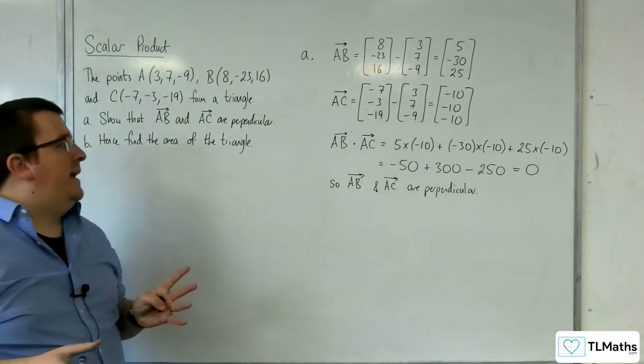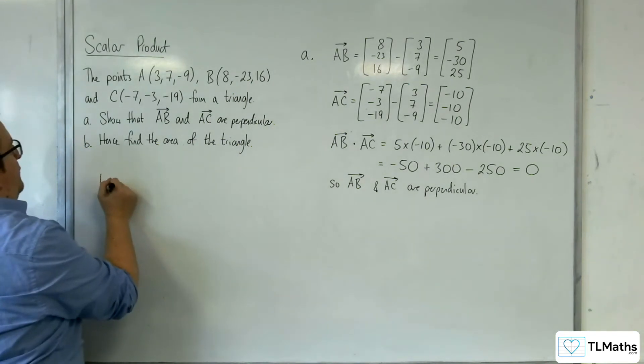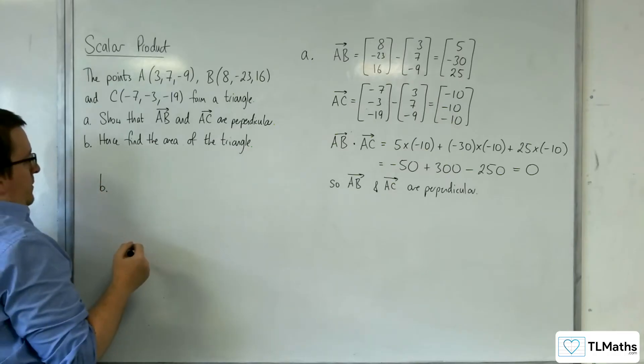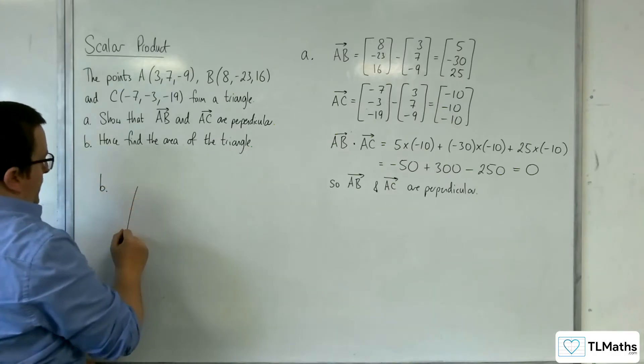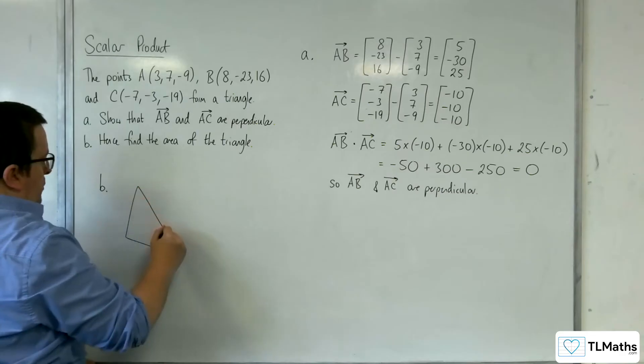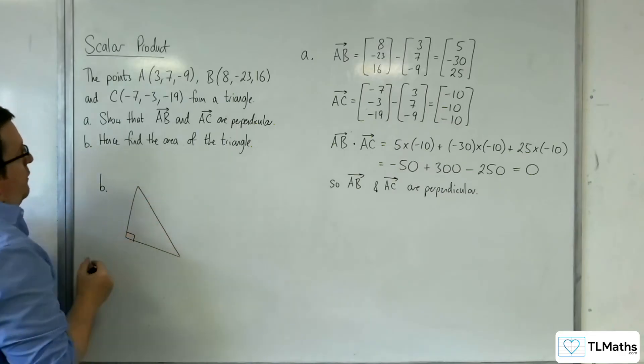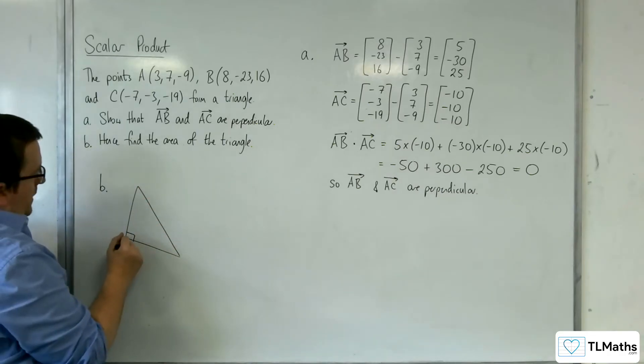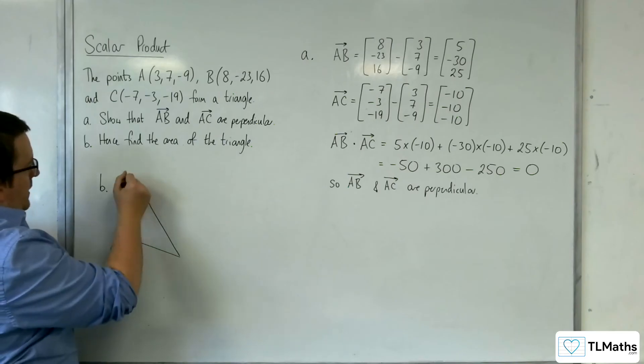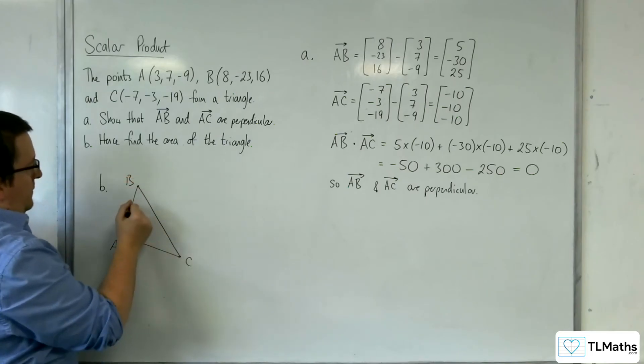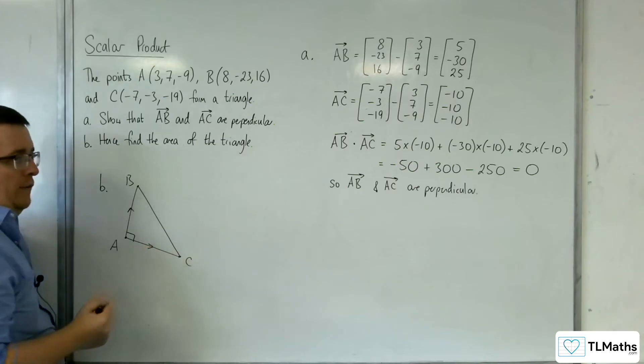The whole idea here is that for part B we need to find the area of the triangle. So what we have is that we now know that there is a right angle here. Here is A, here's B, and here's C, so we've got AB, we've got AC.